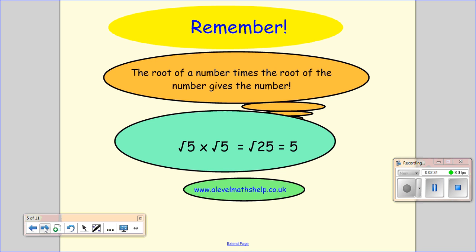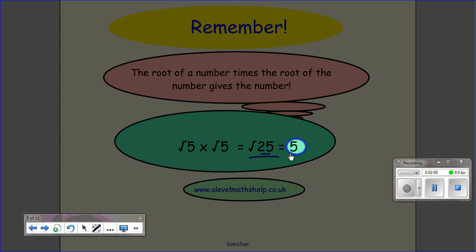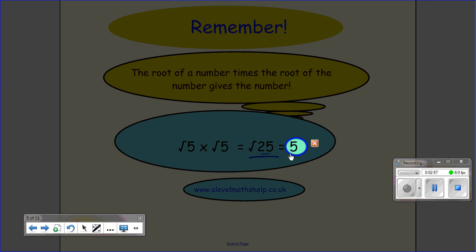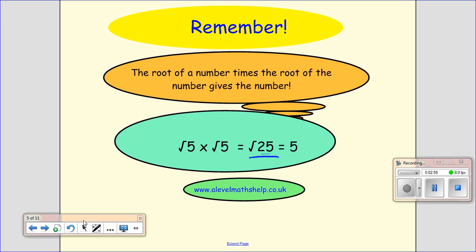You need to remember this. I always say to my students, this is something I repeat over and over again. You just need to know the root of the number times the root of the same number gives you the number. So if I had root 5 times root 5, I can put those together inside my root. That's 5 times 5 is 25, and the square root of 25 is 5. So the root of the number times the root of the number gives you the number.